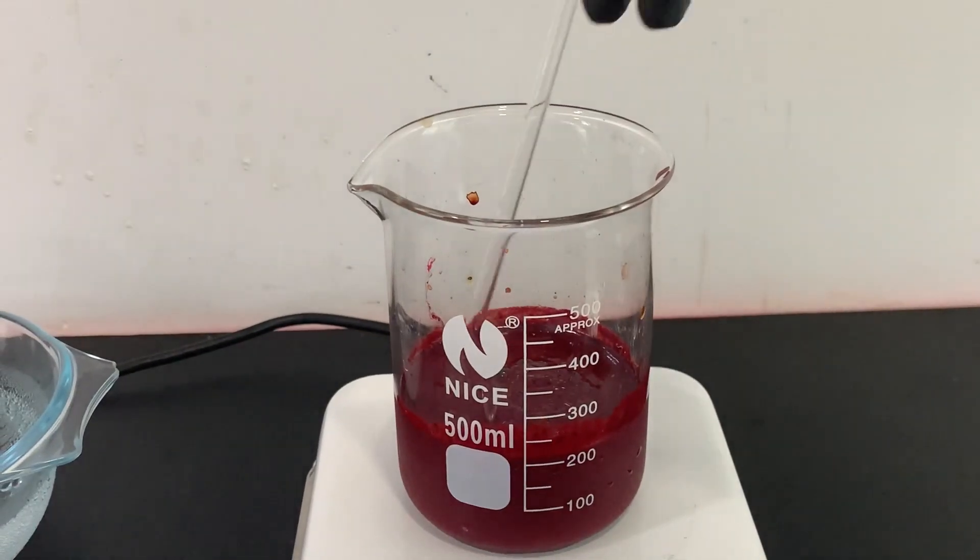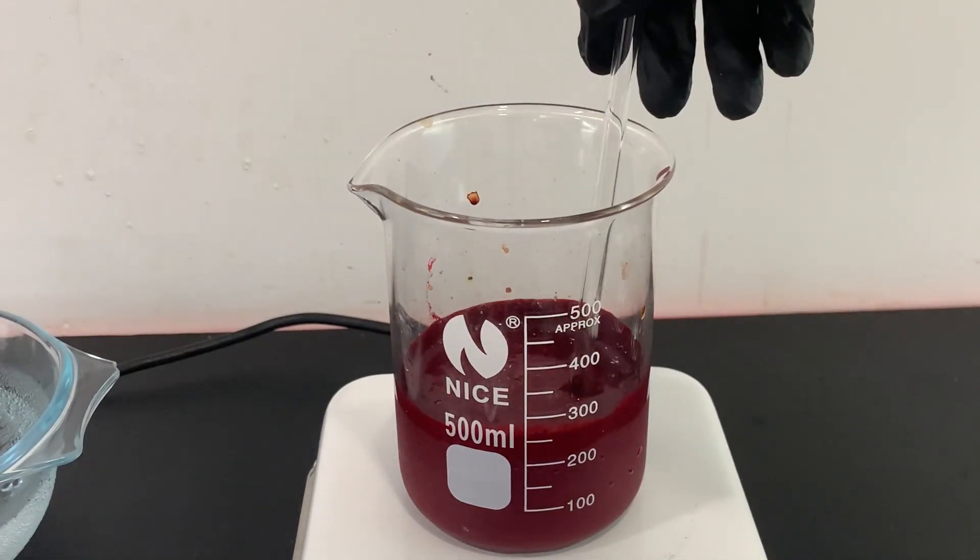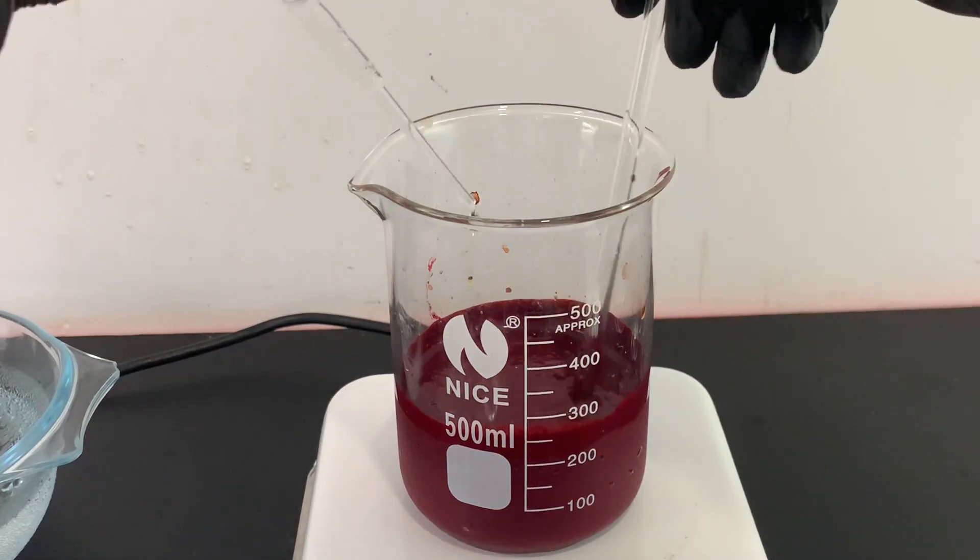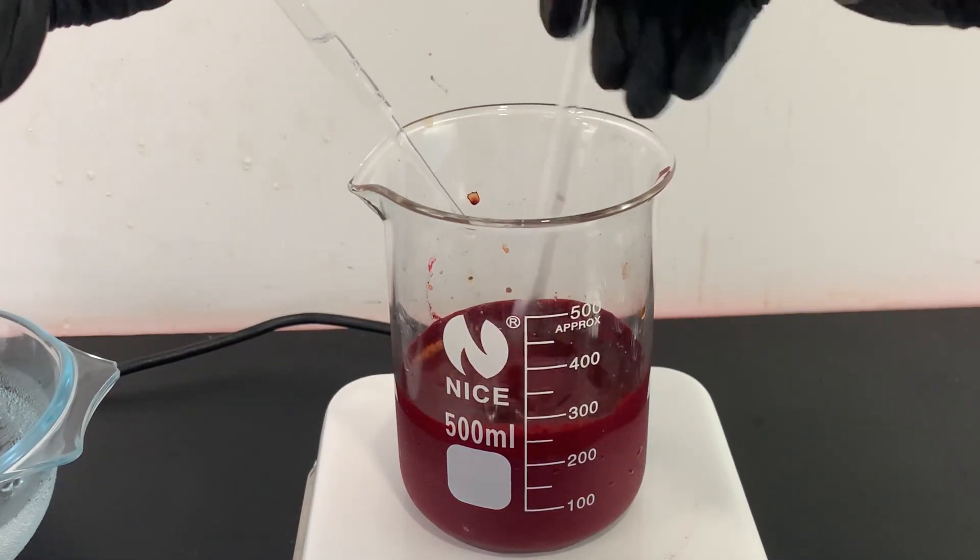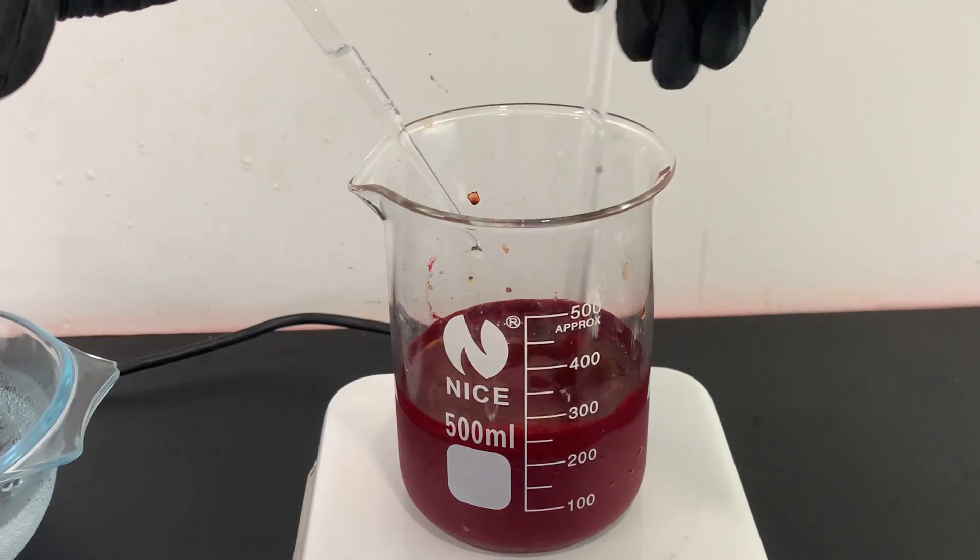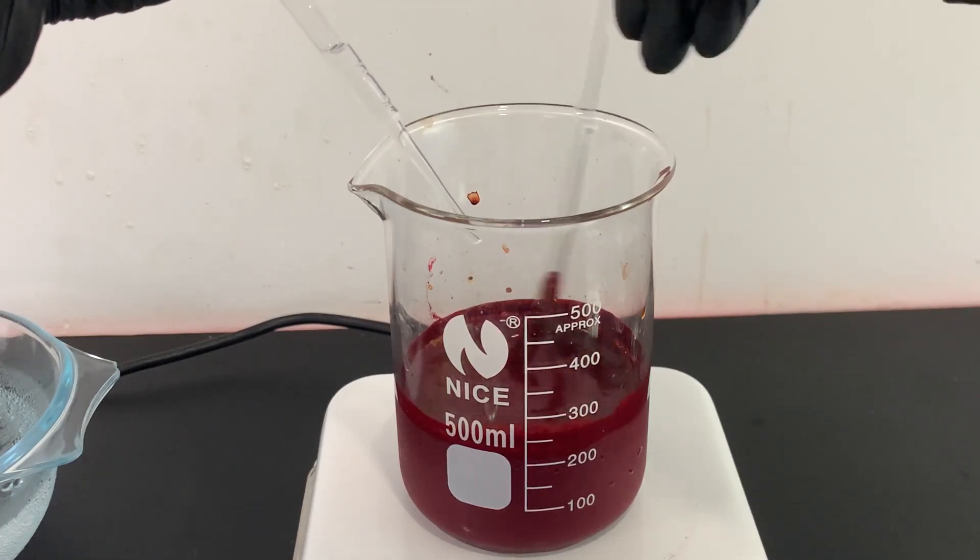I started slowly adding 30 milliliters of a 10% sodium hydroxide solution. I made the solution by dissolving 3 grams of sodium hydroxide in 30 milliliters of water.